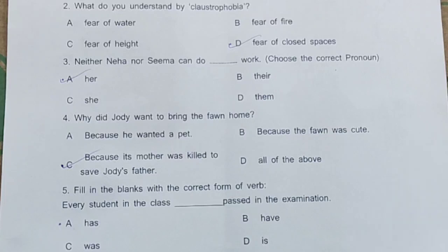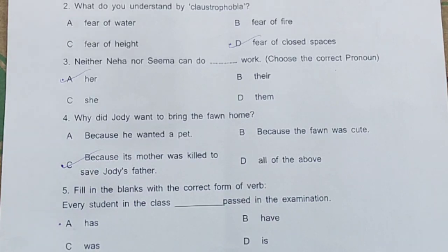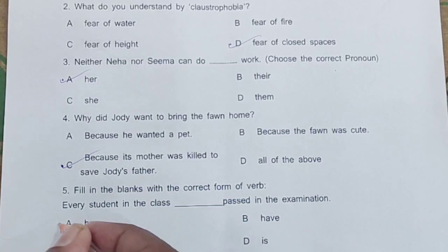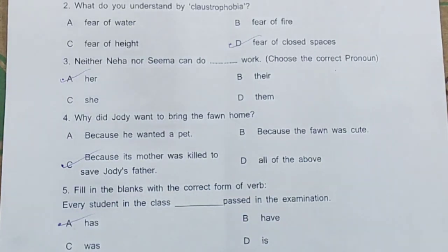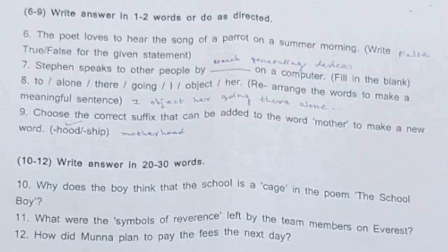Question 5: Fill in the blank with the correct form of the word. 'Every student in the class dash passed in the examination.' Options: a) has, b) have, c) watch, d) is. This question is about subject-verb agreement. Every student in the class is being referred to in a singular sense, so the answer is 'has.' Option A is correct: every student in the class has passed in the examination.